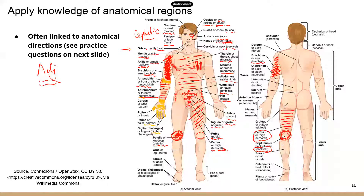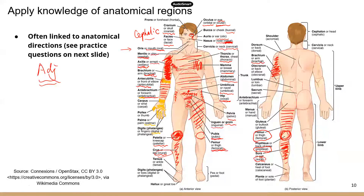The front of the leg is known as crural, and the back of the leg — the calf area — is sural. You need to differentiate the two: crural is anterior, sural is posterior. Here's a mnemonic: crural starts with C and sural starts with S. C comes before S in the alphabet, so crural — coming first — is the anterior part, and sural is the posterior or back part of the leg.